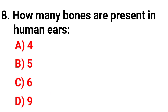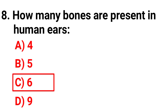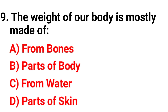Question 8: How many bones are present in human ears? The correct answer is option C — 6. Question 9: The weight of our body is mostly made of — the correct answer is option C — water.